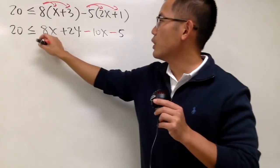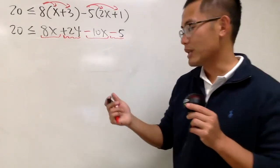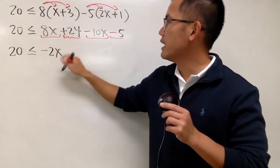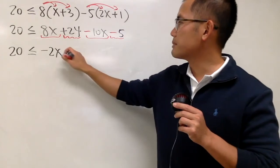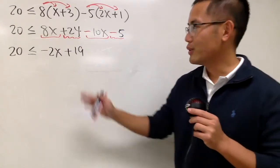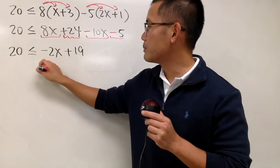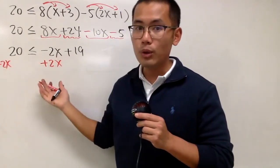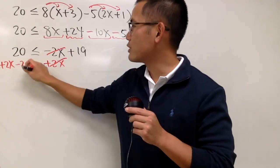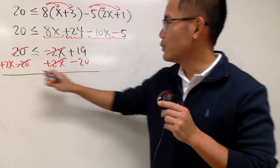Now, looking at the right-hand side, 8x and negative 10x can be combined, and 24 minus 5 can also be combined. So the left-hand side is still 20, less than or equal to 8x minus 10x, which is negative 2x, plus 19. I prefer to have the x on the left-hand side, so let's add 2x on both sides. This and that cancel, and we minus 20 on both sides.